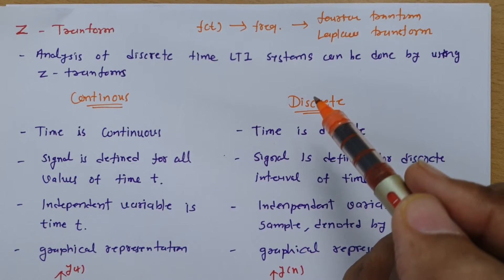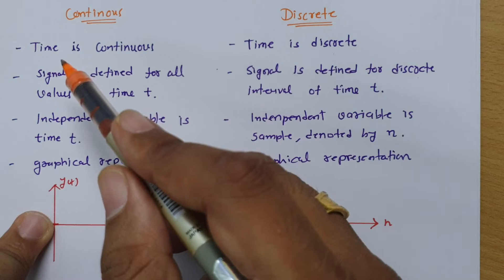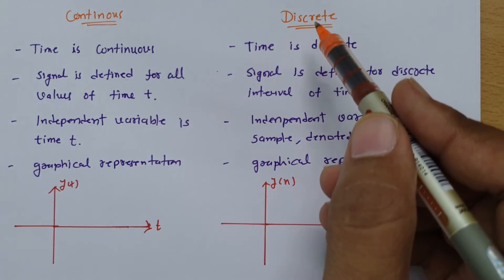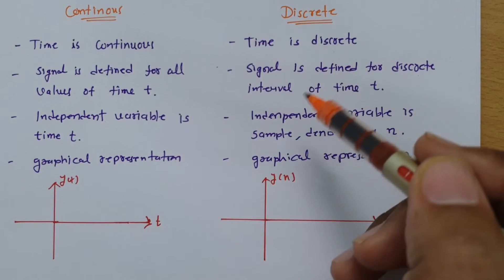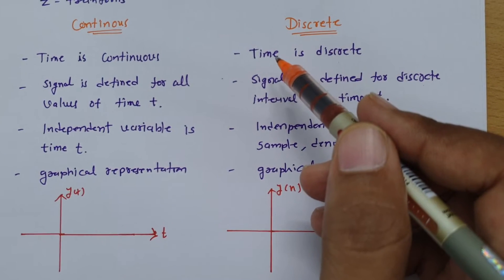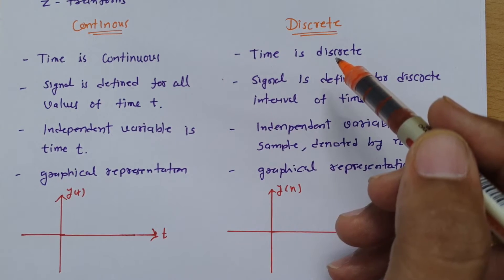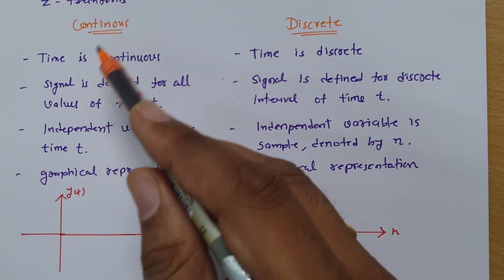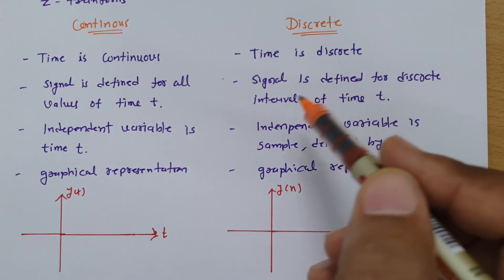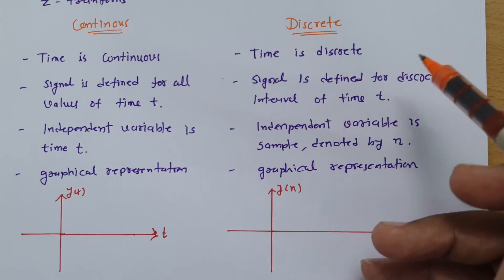Now first I will explain what is there in continuous time and discrete time systems. When we talk about a continuous time signal or system, time is continuous, while in case of a discrete time signal or system, we have time which is discrete. So we don't have a signal at all intervals. In discrete time, you will find there are samples with respect to time. A signal in continuous time is defined for all time, while a signal defined in discrete intervals of time is sampled. This is the basic difference between continuous time and discrete time signals.